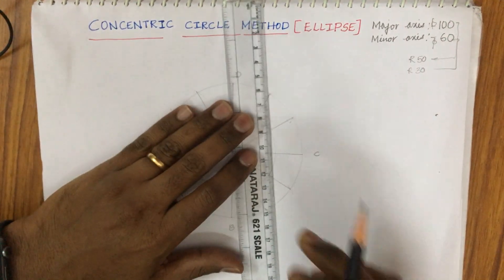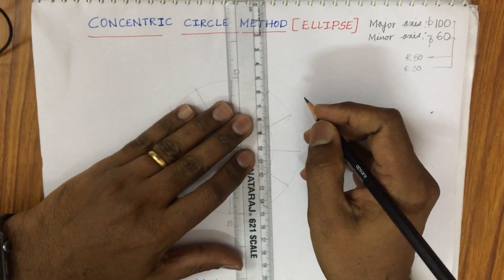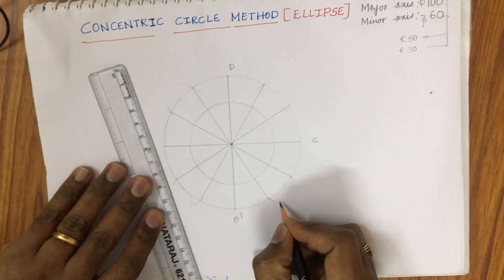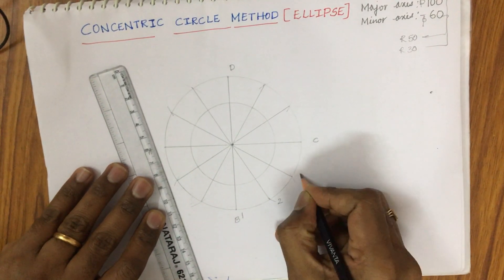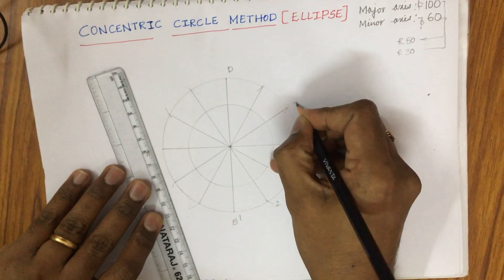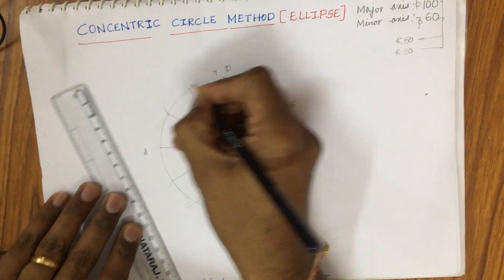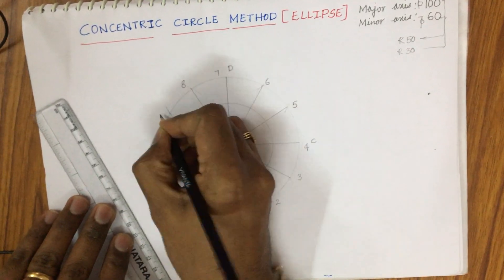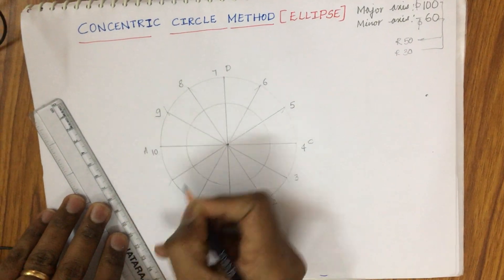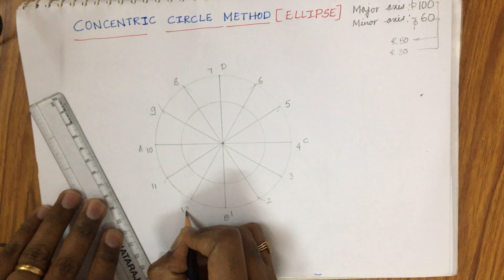Now the construction process starts. Here I write the numbers 1, 2, 3, 4, 5, 6, 7, 8, 9, 10, 11 and 12 on the 12 equal divisions of the circle.